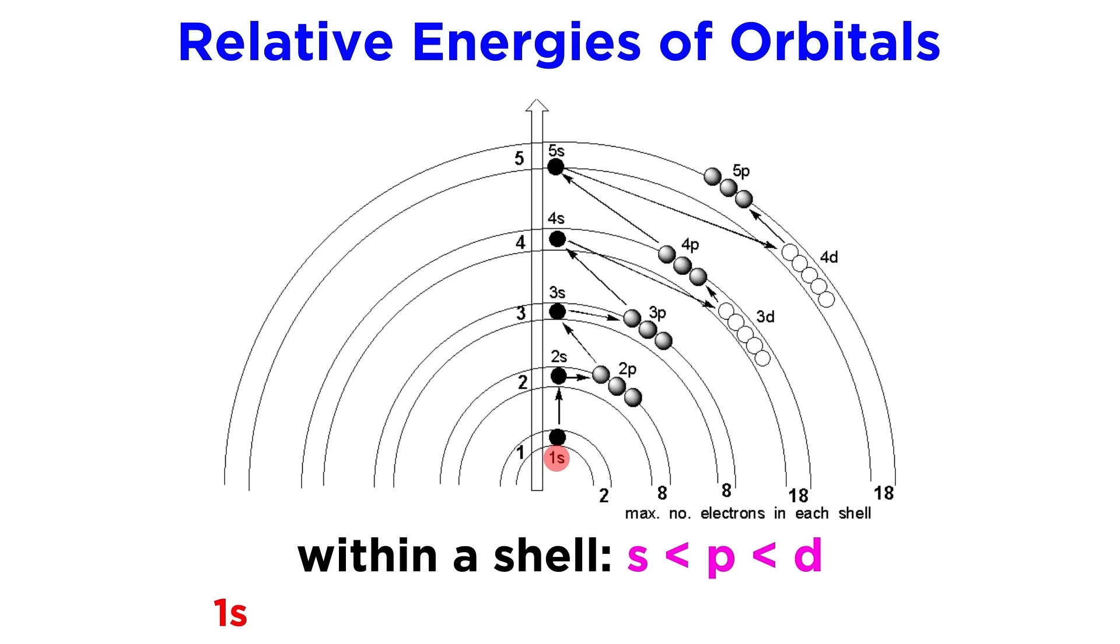So 1s is the lowest energy orbital, then 2s, 2p, 3s, 3p, and so forth.